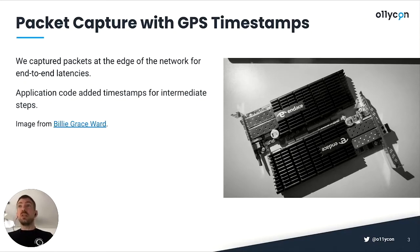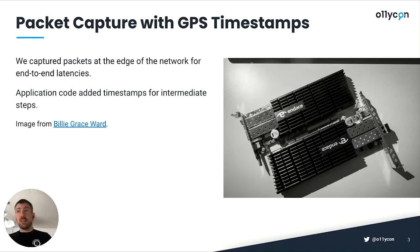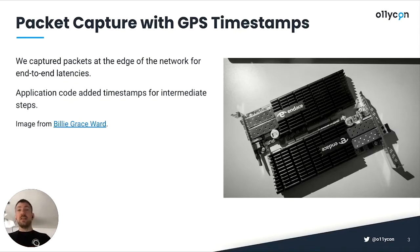The way this was done is we had these packet-capture devices on the egress and ingress links, and those were linked to GPS clocks. That gave us the end-to-end latency, and then the application would build a causality chain inside of it with timestamps as it went through different processing steps that we could then use to segment that overall time to see how much each individual step took.